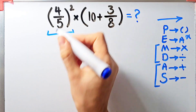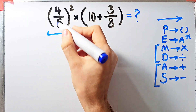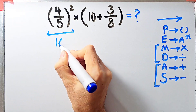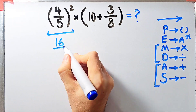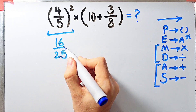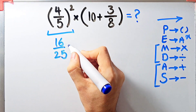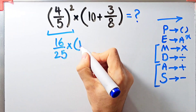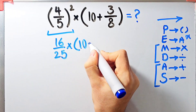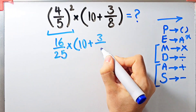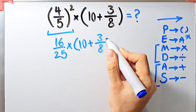First we simplify the parentheses. In the first parentheses we have 4 over 5 to the power of 2. 4 over 5 to the power of 2 equals 16 over 25. Now we have 16 over 25 times open parentheses 10 plus 3 over 8 closed parentheses.